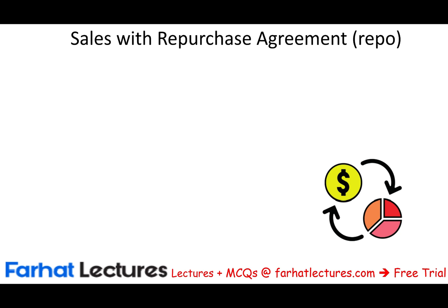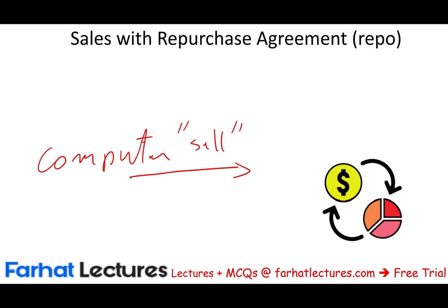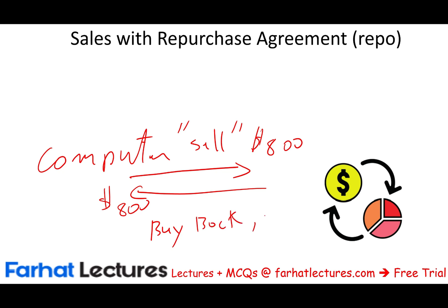Let's start by discussing sales with repurchase agreement, also called repo. Here's how it works. Let's say I have a laptop. I can 'sell' my computer to you for $800 — you give me $800 and I give you the computer. Then, a month later, I will buy back that same computer for $1,000. So I sell it to you for $800 and buy it back for $1,000.